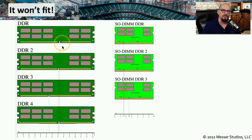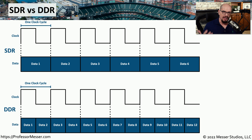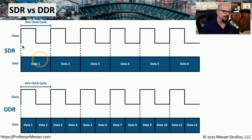Depending on the type of memory you're using, the notches may be in a different place. These notches prevent us from using the wrong type of memory in our system. So if you try to install a DDR2 module into a system with a DDR3 slot, that notch will not allow that memory to be installed. There's a clock inside our computer that keeps track like a metronome. With older single data rate memory, one clock cycle transfers one bit of data — data 1, data 2, data 3, and so on.